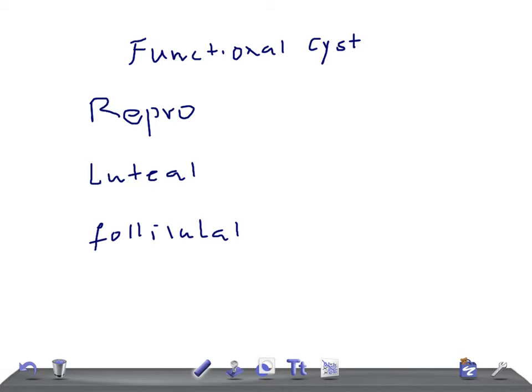You have to do ultrasound, a sonogram, because you have to look whether it's a simple cyst or a complex one. There can be complex masses also, like the most common ovarian mass in a young woman is dermoid cyst.